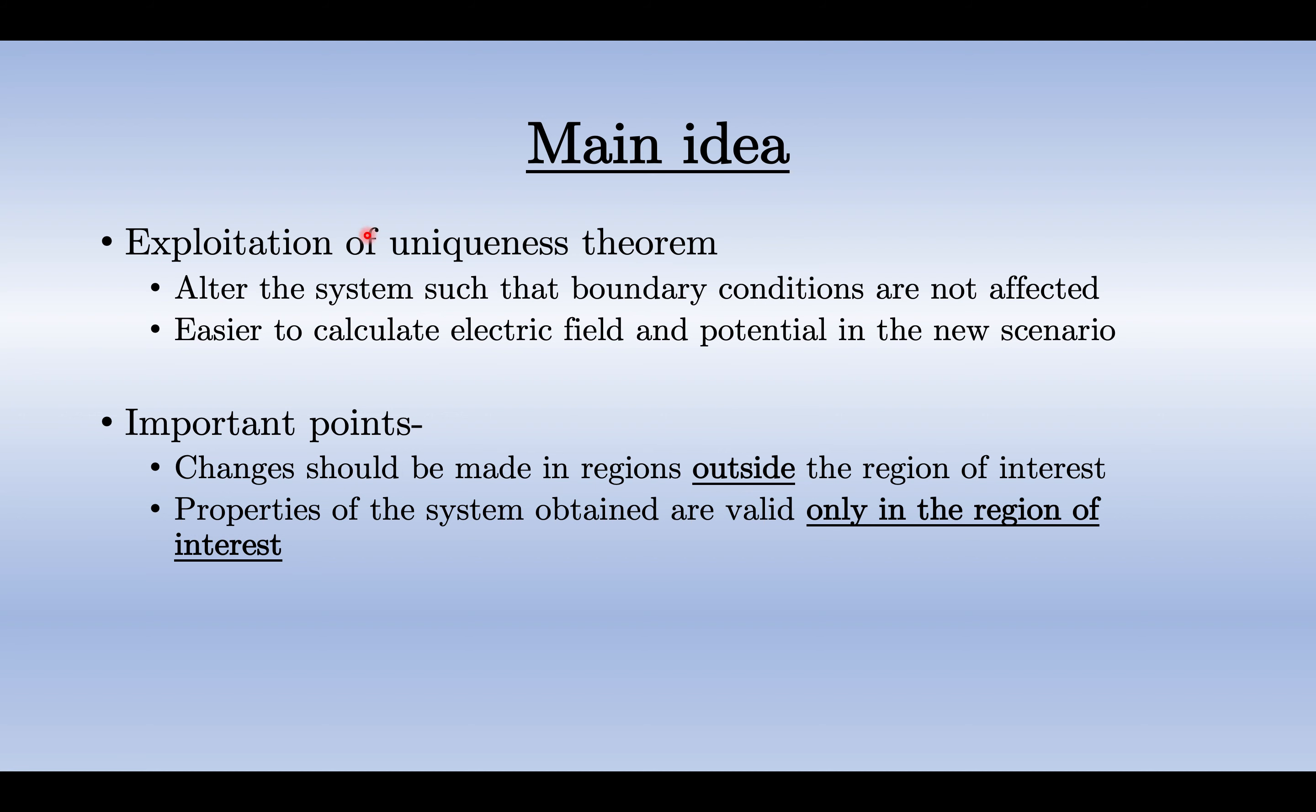Now what we're going to see is that if we alter the system such that boundary conditions aren't affected, but this system is such that we can calculate the electric field and potential much easier, then whatever we do now won't really be different from what would have been the case with the original condition. This is a very interesting hack or exploitation which makes many problems much easier and works surprisingly well.